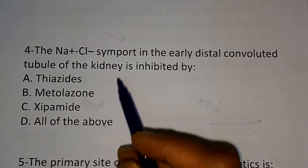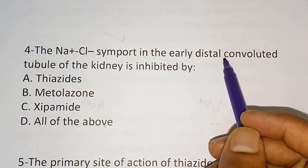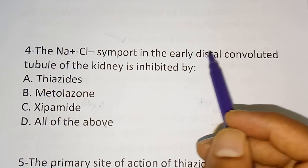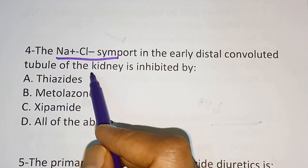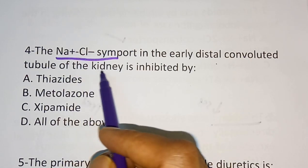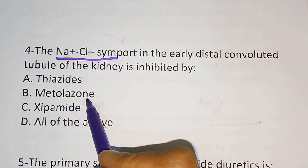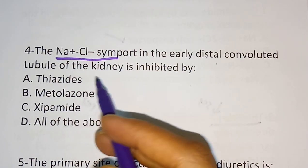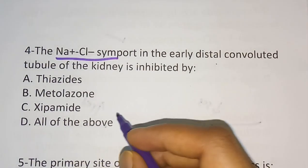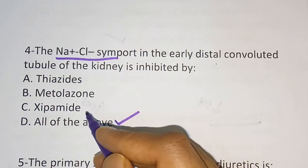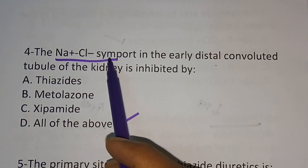Question number four: The sodium chloride symporter in the early distal convoluted tubule of the kidney is inhibited by which drug? Option A: Thiazide diuretics. Option B: Metolazone. Option C: Cipamide. Option D: All of the above. The correct answer is Option D — all of the above. Thiazide, metolazone, and cipamide all cause inhibition of the sodium chloride symporter.